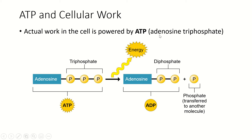ATP stands for adenosine triphosphate. Adenosine is a nucleic acid. Phosphate is a phosphorus with four oxygens attached. And triphosphate means that there are three phosphates attached. You can see here's our adenosine, phosphate, phosphate, phosphate, and we've got chemical bonds between the phosphate groups.